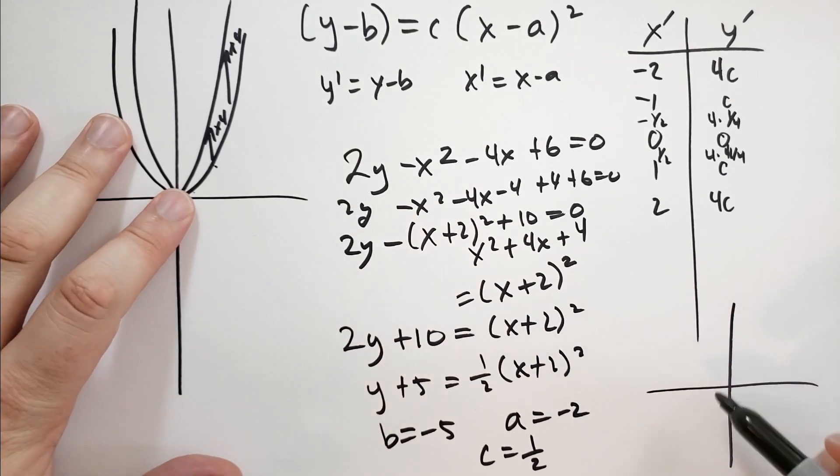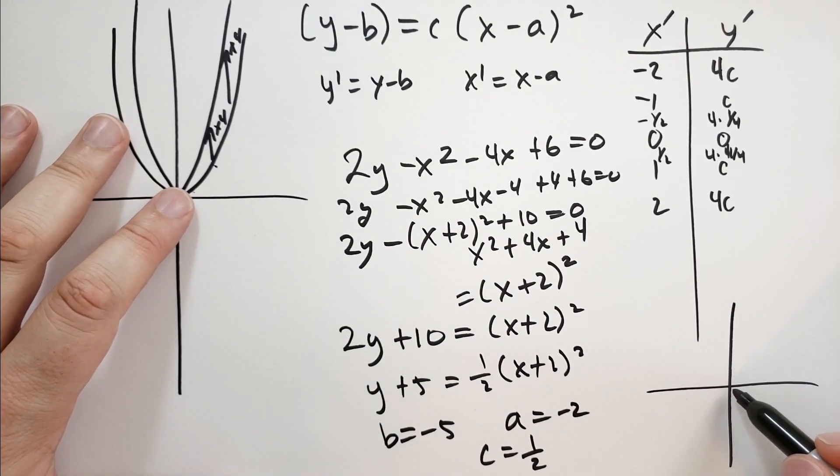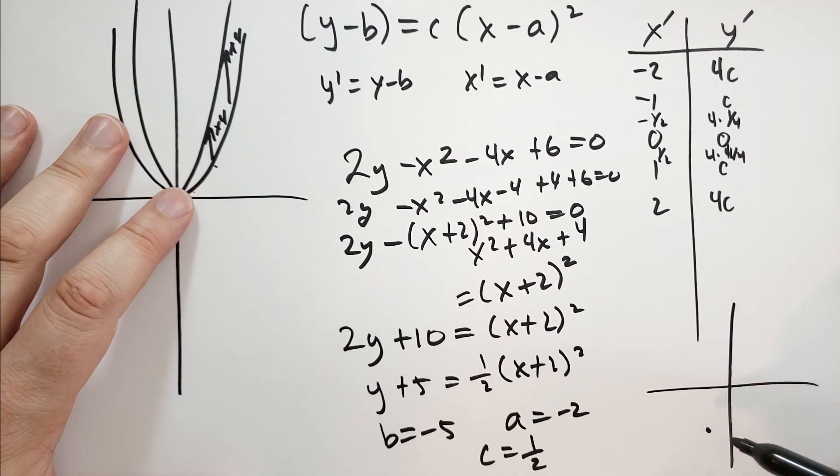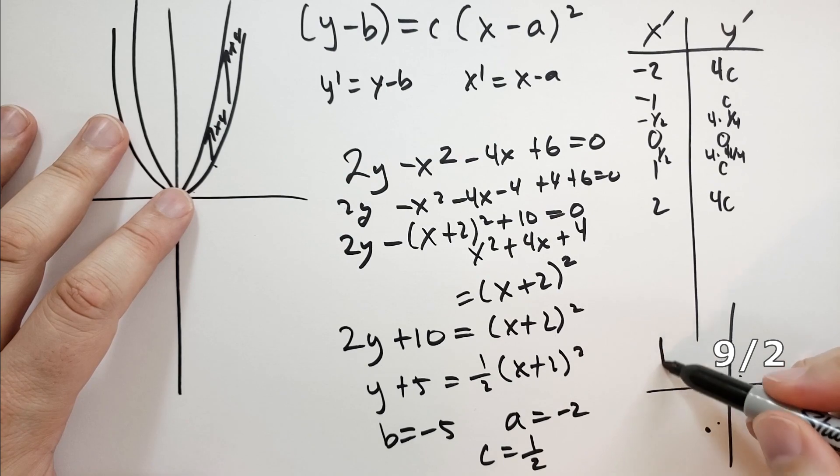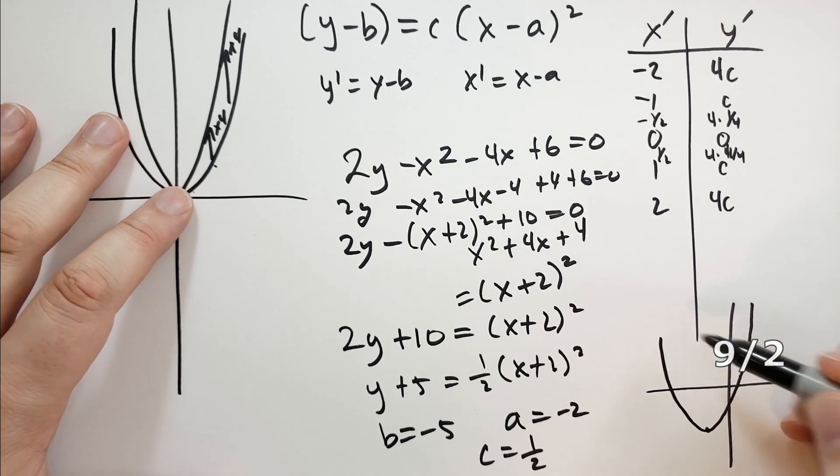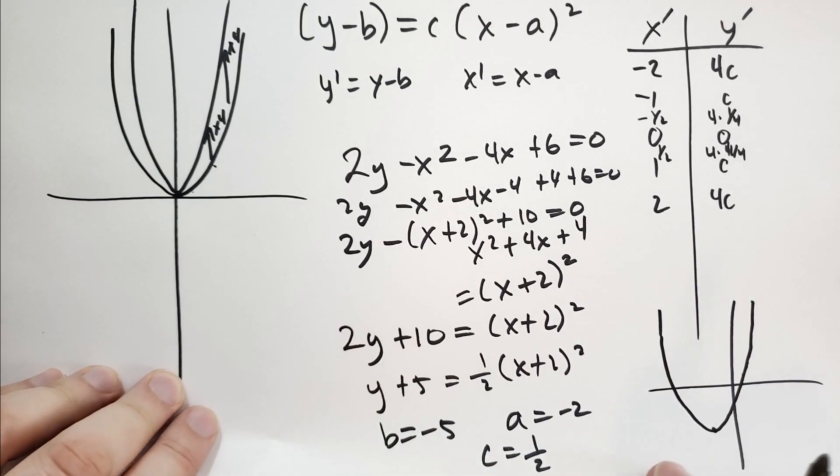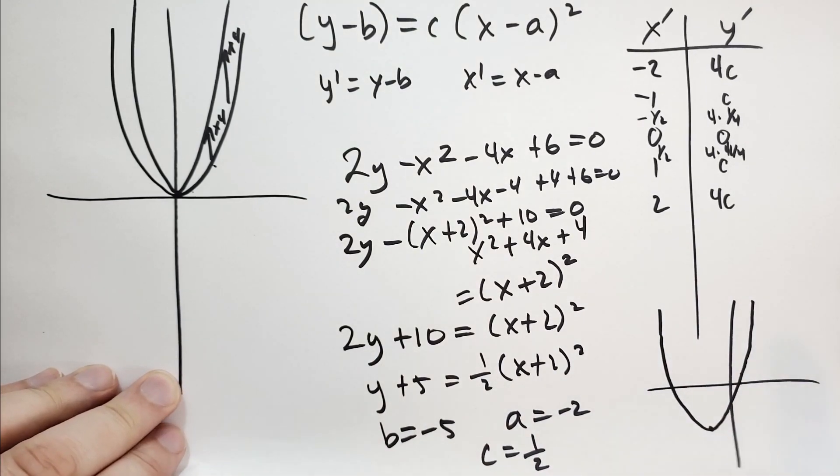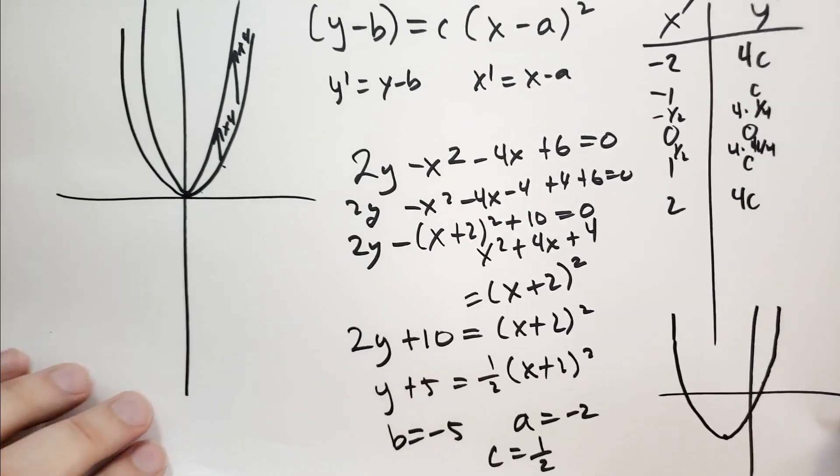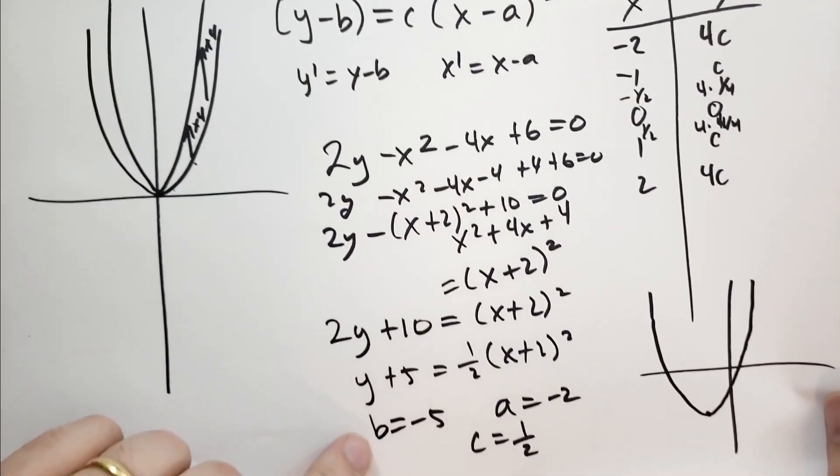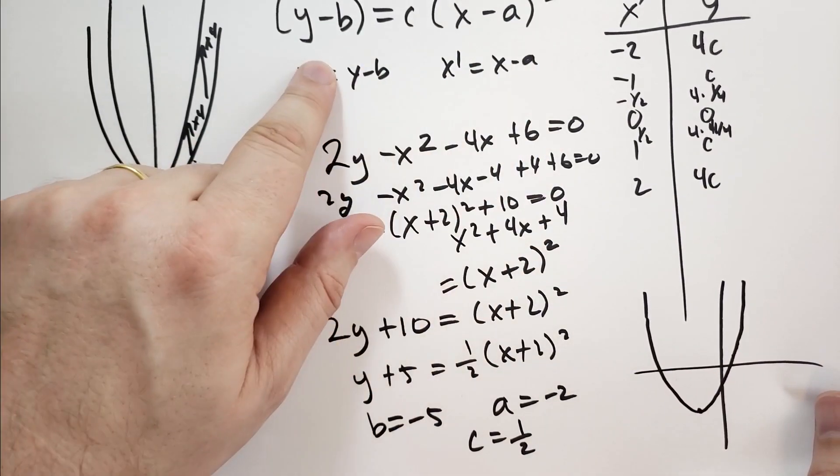This is everything we need to graph that parabola. Let me just draw it over here really quick. The new center is minus 2, minus 5. Then it's going to be squished down by half, so it's going to go over 1 and up 1/2, over 2 and up 2, over 3 and up 4. It's going to be a little flatter than a regular parabola. All that complicated equation stuff turns out to be pretty easy if you put it in the form where you can recognize it.